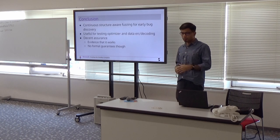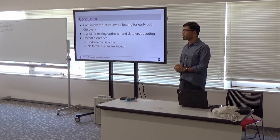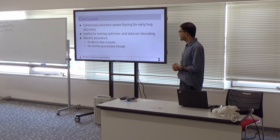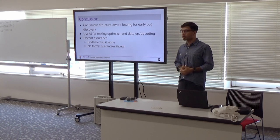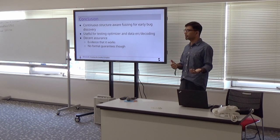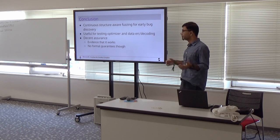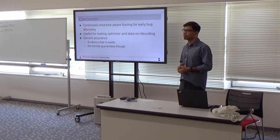So in conclusion, we started doing continuous structure-aware fuzzing to detect problems with the optimizer and alert us whenever there's a bug in the code base. It's been so far used for fuzzing the optimizer and ABI encoding. It has decent assurance, but bear in mind that testing is not formal. It doesn't give you any formal guarantees.